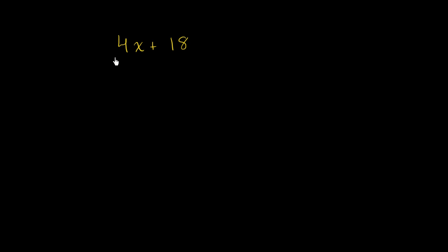So we can rewrite 4x as being 2 times 2x. If you multiply that, it's obviously going to be 4x. And then we can write 18 as the same thing as 2 times 9.